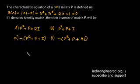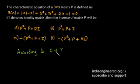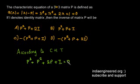We can rewrite the equation when the matrix satisfies that, according to Cayley-Hamilton theorem. We can rewrite the equation as P cube plus P square plus 2P plus I equal to 0.